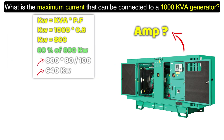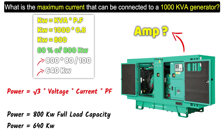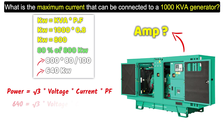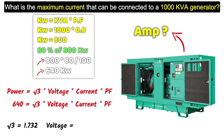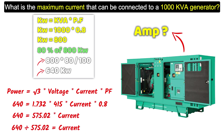To find the ampere at 80% load, use the formula: Power = √3 × Voltage × Current × Power Factor. Here we write 640 kW for the 80% load power. The value of √3 is 1.732. For a three-phase generator we use 415 volts, and the power factor is 0.8. Multiplying √3 × voltage × power factor gives 572.02.